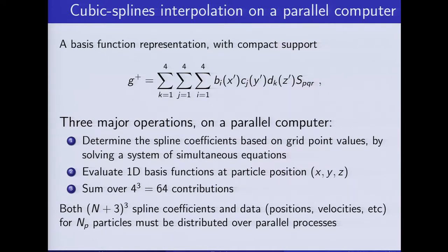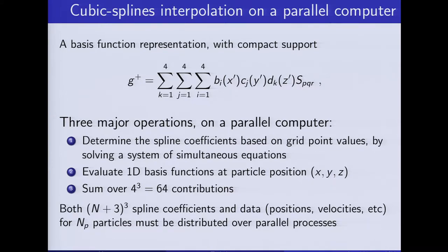We then perform a triple summation over 64 contributions. There are some challenges: depending on where the particle is, some of the terms going into the summation are going to be on multiple processes. So we have to somehow combine the result over all the participating processes. Also, to obtain the differentiability properties of cubic splines, for N grid points in one direction we are going to have N plus three spline coefficients. So how do we divide the network efficiently over the multiple processes?